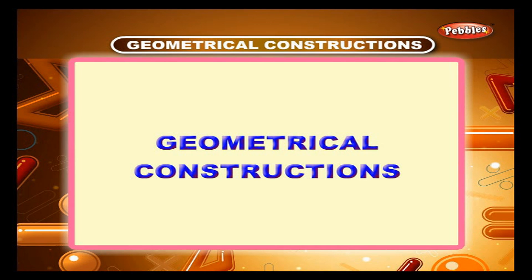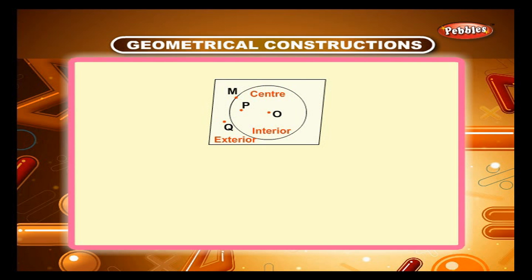Chapter 11: Geometrical Constructions. The point O is the center of the circle. The points O and P are in the interior of the circle. The point N is on the circle. The point Q is in the exterior of the circle.